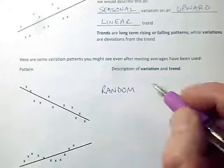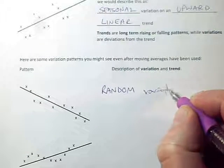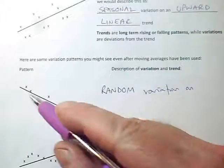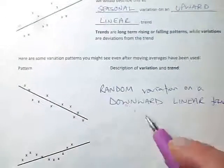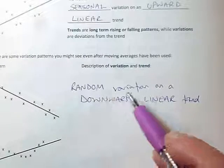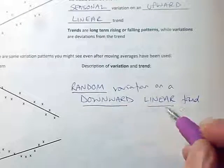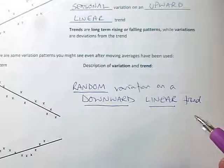In this case, we've got random variation on what sort of trend have we got? Well, it's downward and it's linear. So these three words, random variation on a downward linear trend. So these three words in capitals are the ones that change and the other words stay the same.